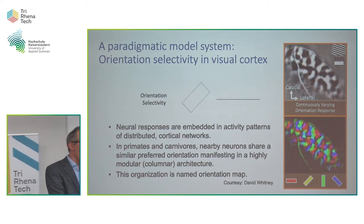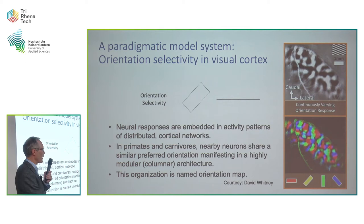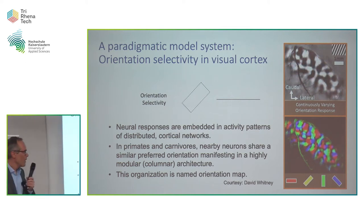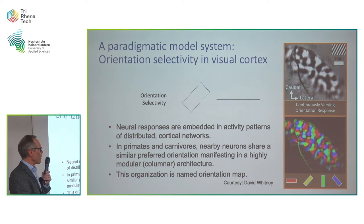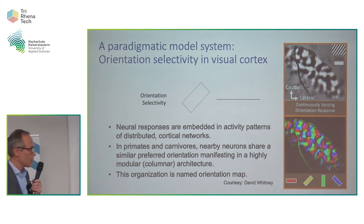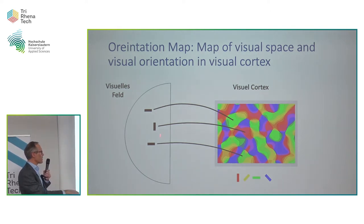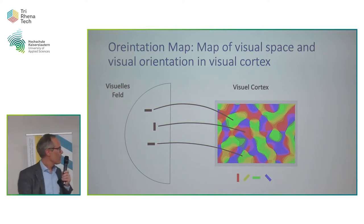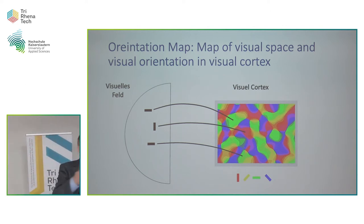You can color code and visualize this in what's called an orientation map, where you color code the visual angle that best drives particular neurons at each location. That's a beautiful, peculiar structure — underlying it you have individual neurons, but you have this mesoscopic pattern that defines the spatial layout in your cortical tissue of how visual angles are encoded. Both visual location and orientation are mapped. This is textbook neuroscience.